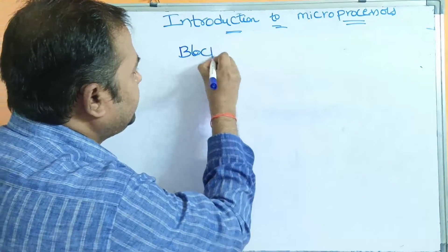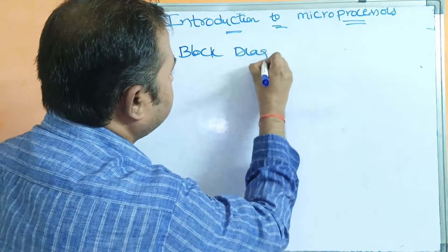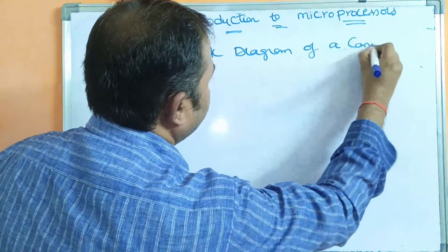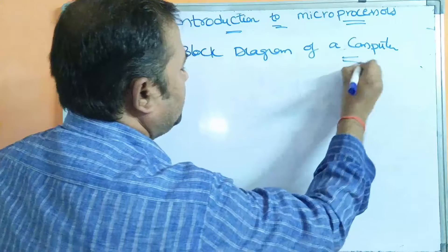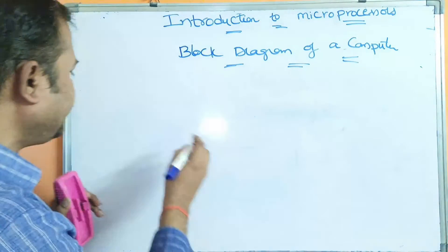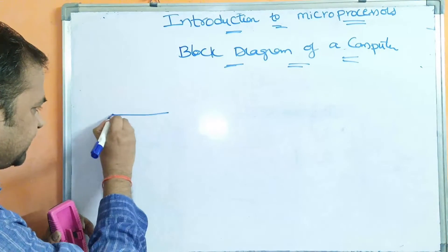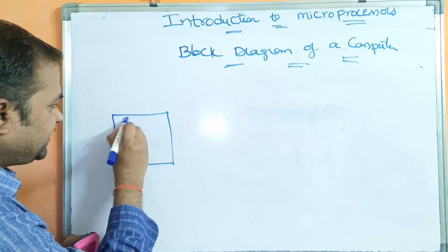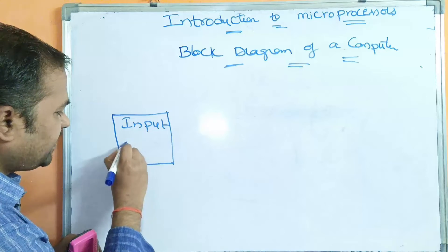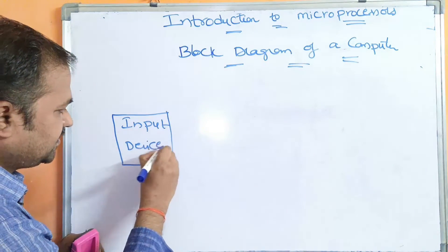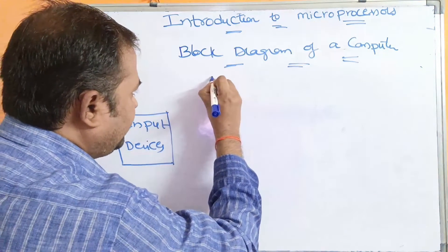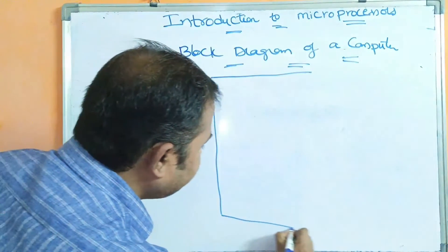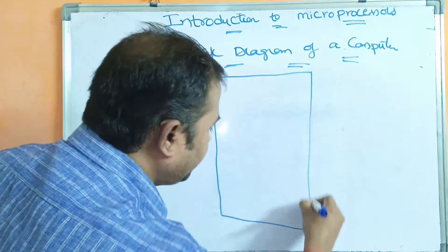Block diagram of a computer. Any computer mainly contains three types of devices. First one is input-output devices. Let us draw the input devices here. Next, we have two more components: processor and memory.